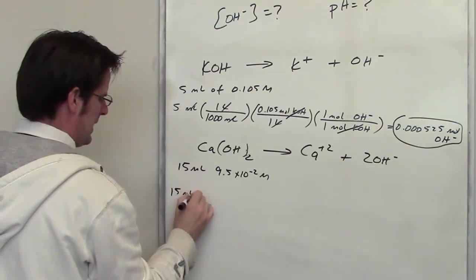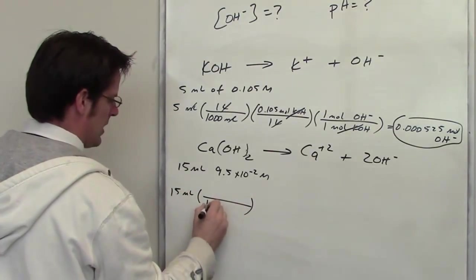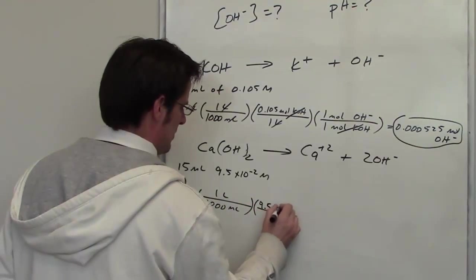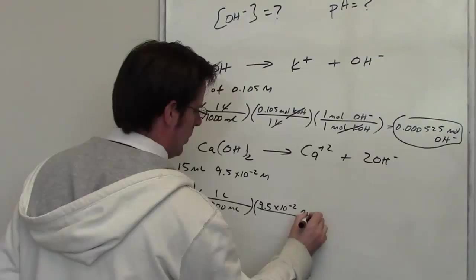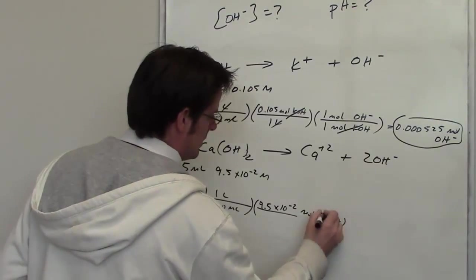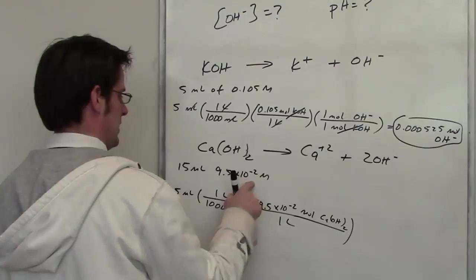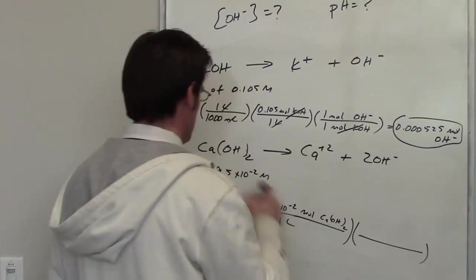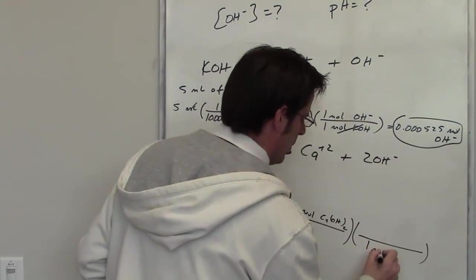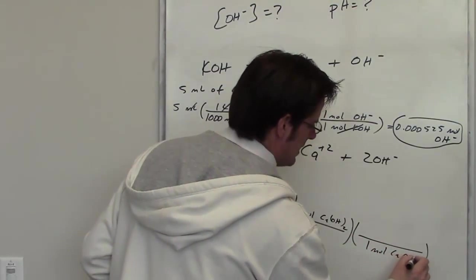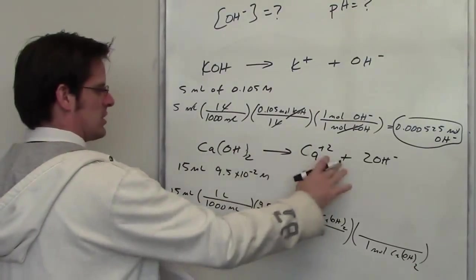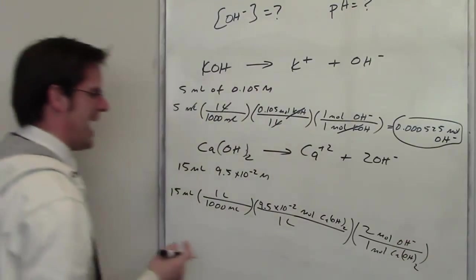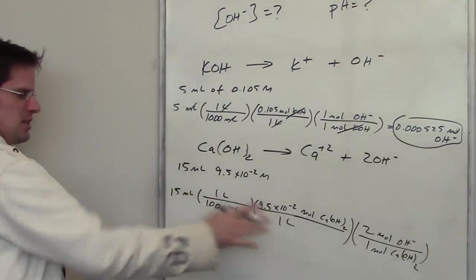I've got 15 milliliters. I need to convert that to liters. So I'll go ahead and remember that there are 1,000 milliliters in one liter. I've got 9.5 times 10 to the negative 2 moles of calcium hydroxide in one liter. That's the concentration of this thing. How many moles of hydroxide is that going to end up being? For every 1 mole of calcium hydroxide that I have in this balanced stoichiometric equation, I have 2 moles of hydroxide getting spat out. So you can hopefully look at this and make sense of it.